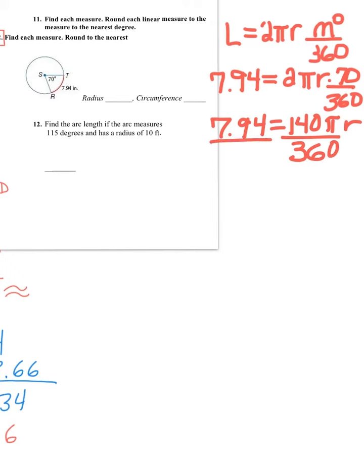So, all I need to do is make this a proportion, so 7.94 times 360, because you cross-multiply like this, and then 1 times the numerator, well, that is just the numerator, which equals 140 pi. Let me move this page.